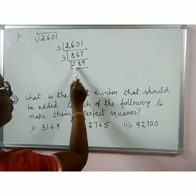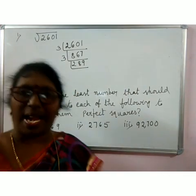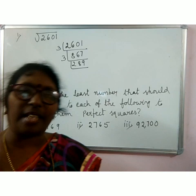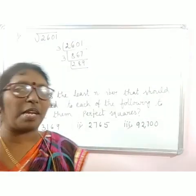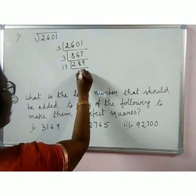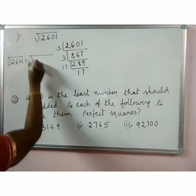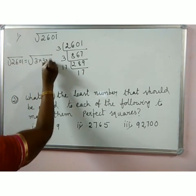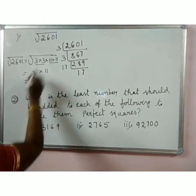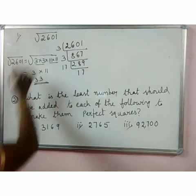You have to check prime numbers one by one: 2, 3, 5, 7, 11, 13, 17, 19, 23, 29, 31, 37 — all these are prime numbers. Here 17 × 17 = 289. So square root of 2601 equals square root of 3 × 3 × 17 × 17. For each pair of equal factors, take one out: one 3 and one 17, giving 3 × 11 = 33. So the square root of 2601 is 33.